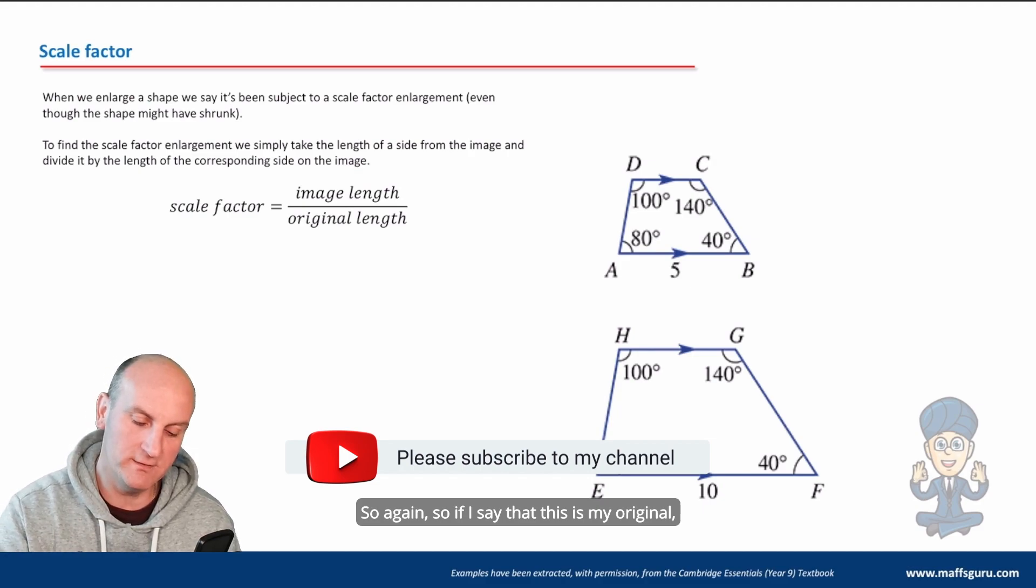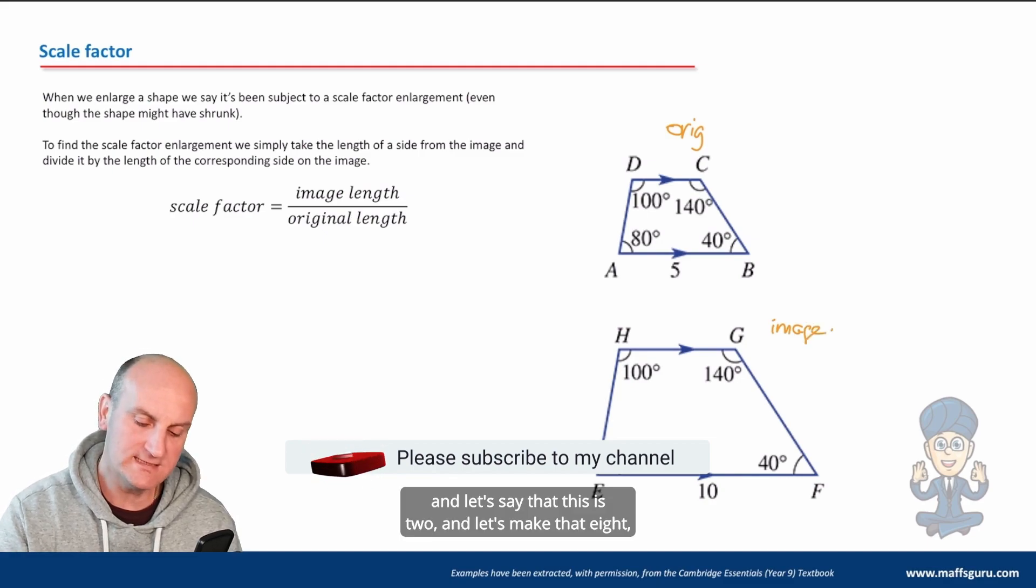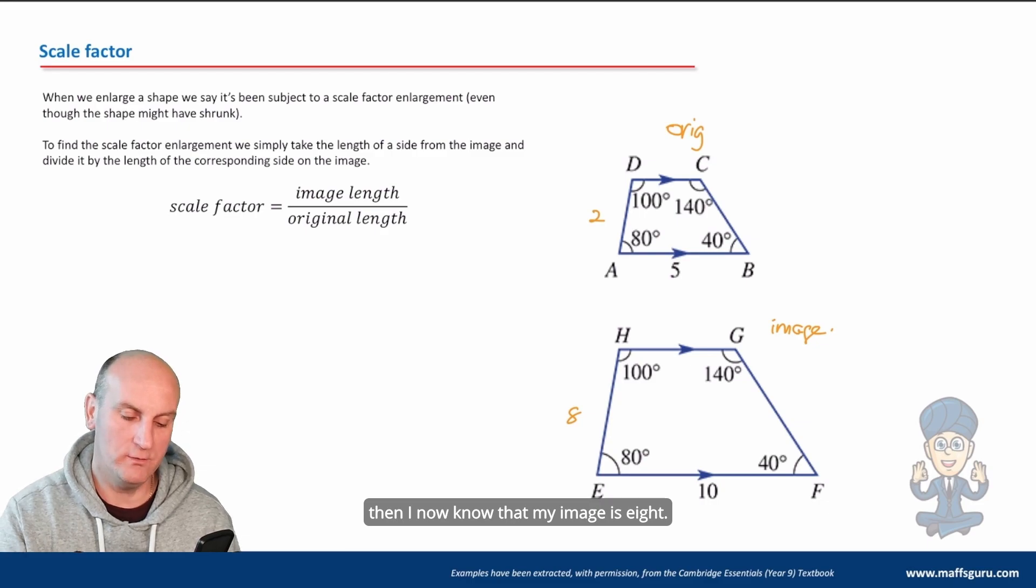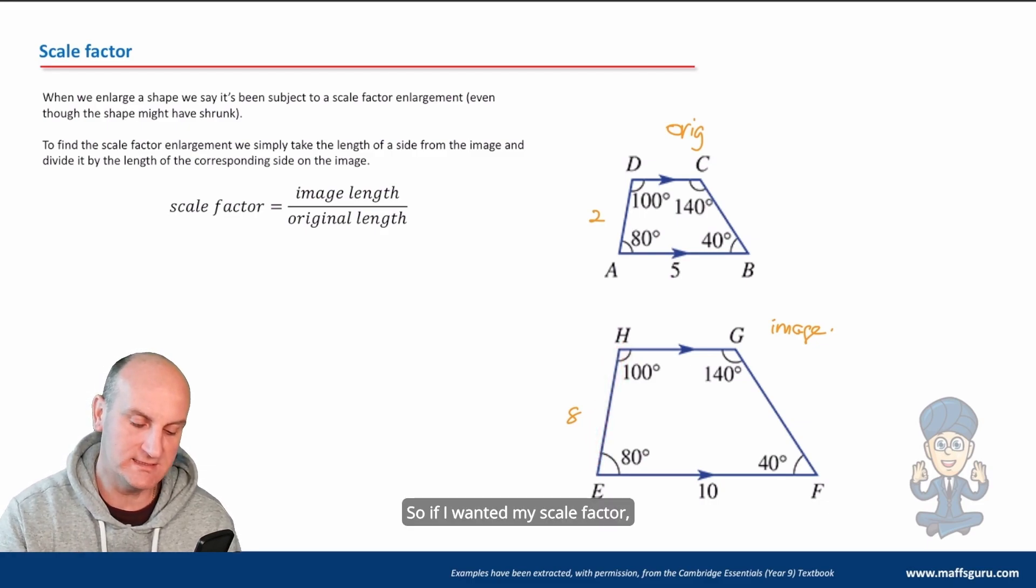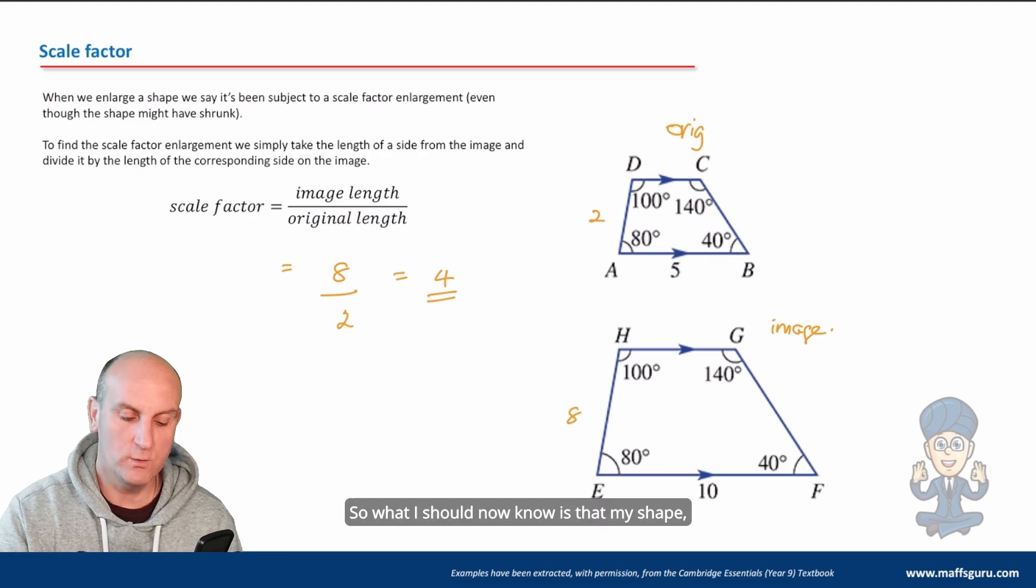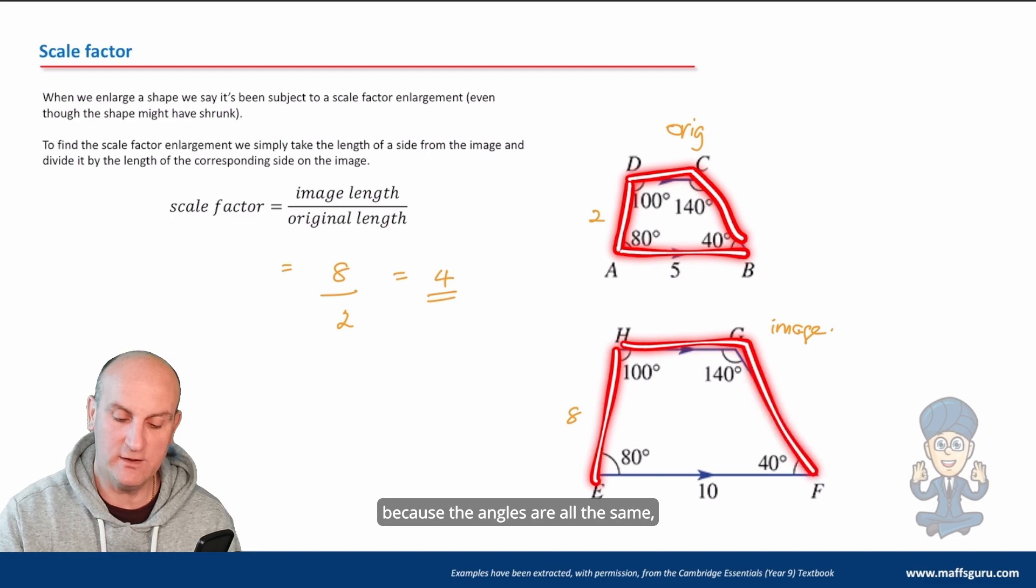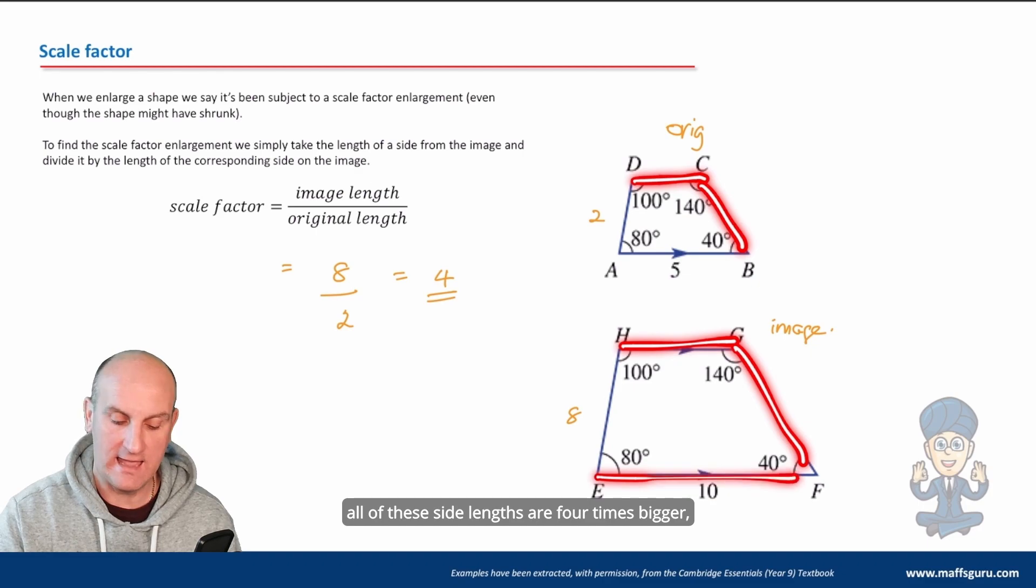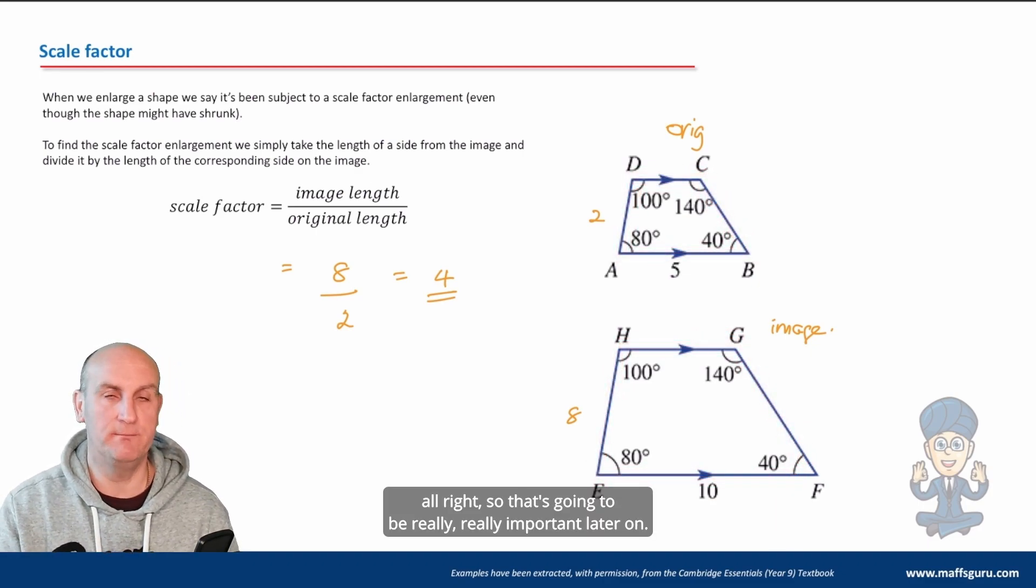If I say that this is my original, let's call it orange, and I say this is my image, and let's say that this is two and let's make that eight, then I now know that my image is eight. So if I wanted my scale factor, I would do my image length which is eight divided by my original length which is two, which gives me four. So what I should now know is that my shape, because the angles are all the same, all of these side lengths are four times bigger. That's going to be really important later on.